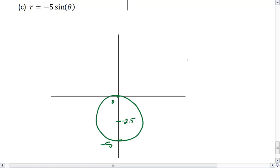So this circle has a radius of 2.5. We just take negative 5, divide by 2, and it has a center at (0, negative 2.5).